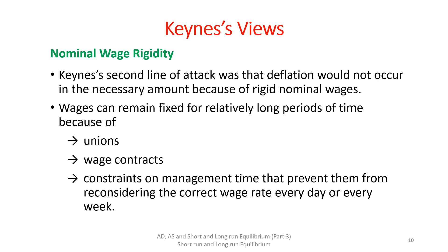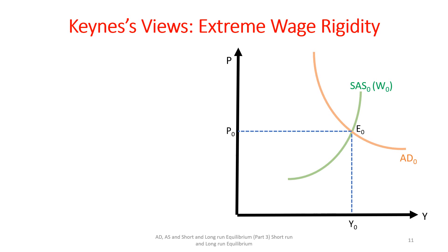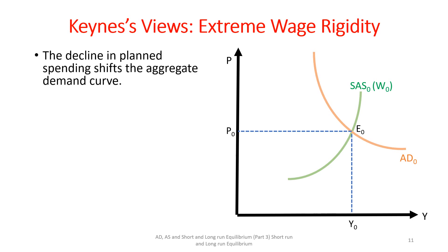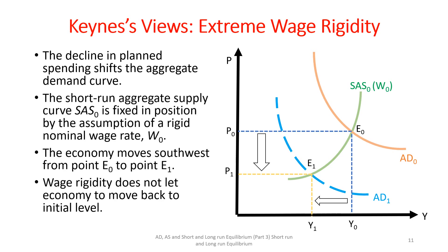The case of extreme wage rigidity can be seen in the following diagram. A decline in planned spending shifts the aggregate demand curve leftward. As a result, the economy moves from point E0 to E1. Here, the short-run aggregate supply curve is fixed in position by the assumption of fully rigid nominal wages. This wage rigidity does not let the economy move back to the initial level. In such a situation, government intervention is needed to restore output to its potential level.